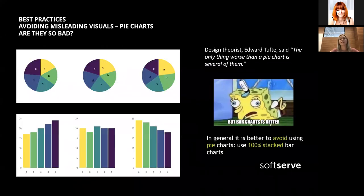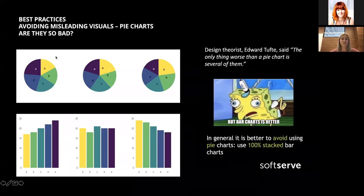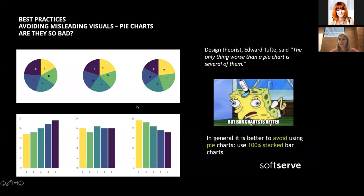Pie charts are bad in almost all situations. In one visualization you see three nearly identical pie charts, but when visualizing the same data in a bar chart, you can see the data is clearly different. Without labels, you cannot clearly understand values from a pie chart.